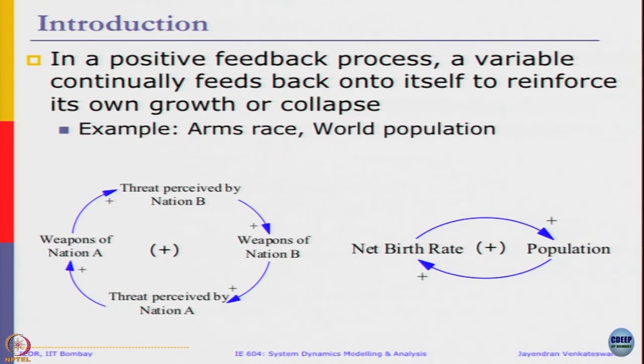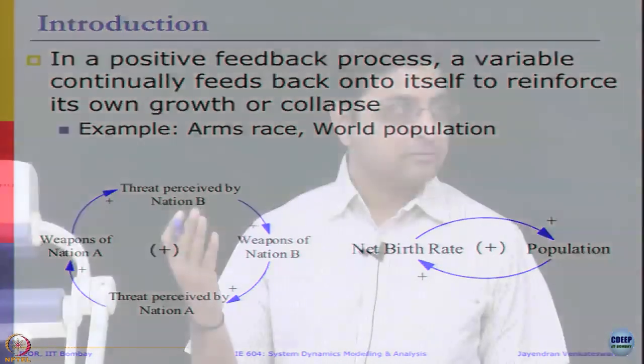The population will not grow linearly because whenever there are more births it increases the population and after some time that increased population will contribute to further higher birth rates. This is going to continuously feed itself and it will result in an exponential growth of the variable population.